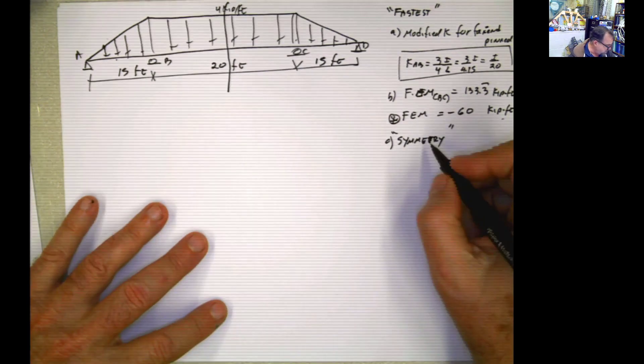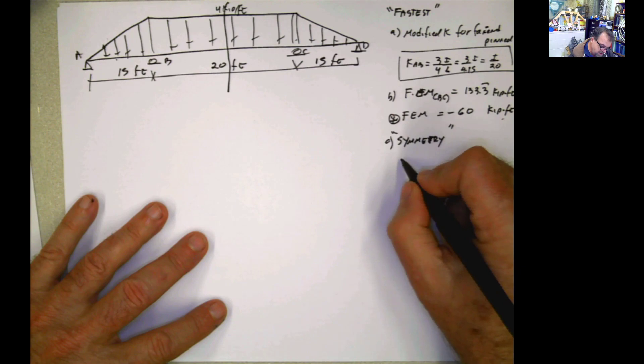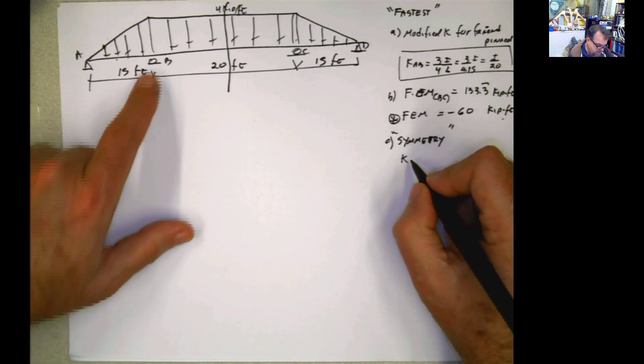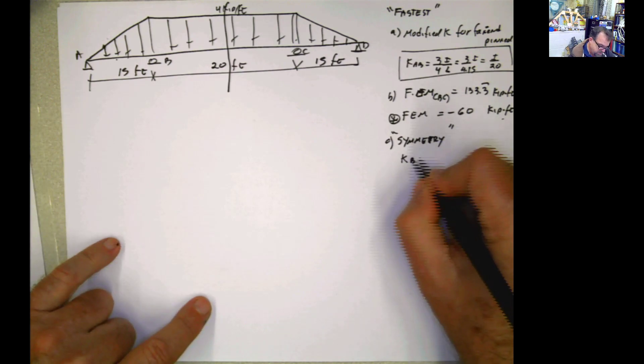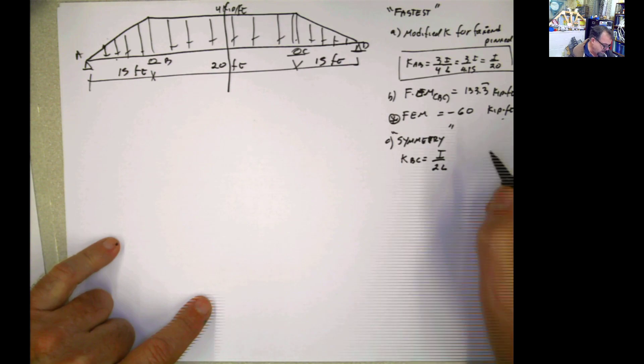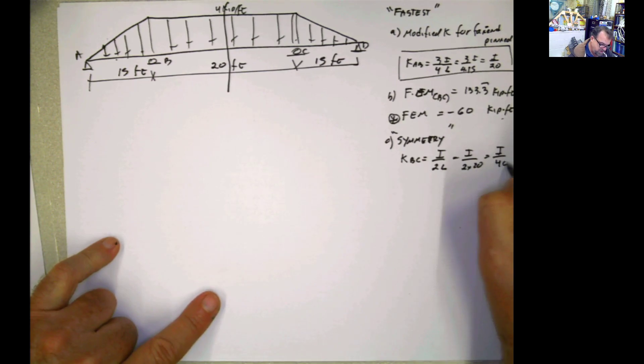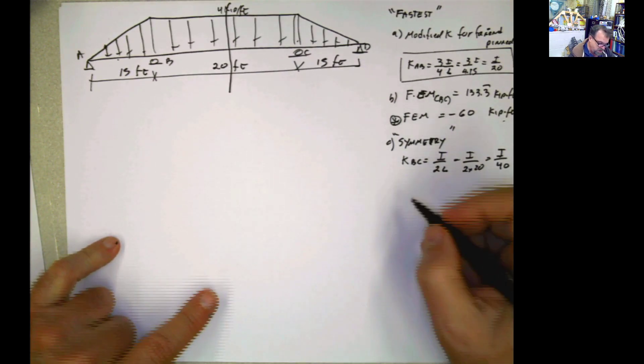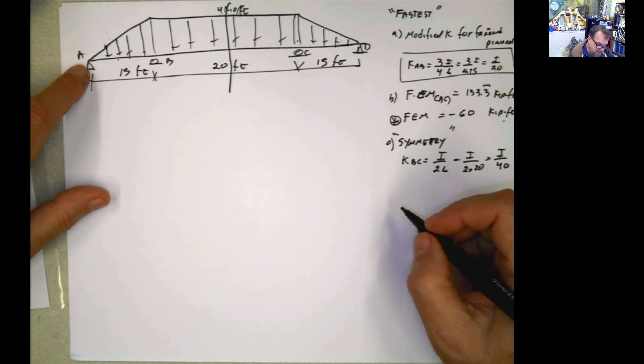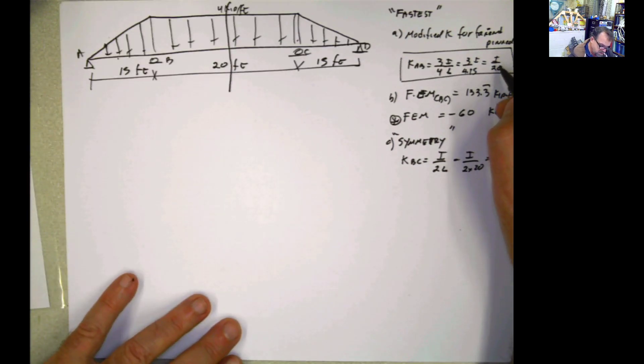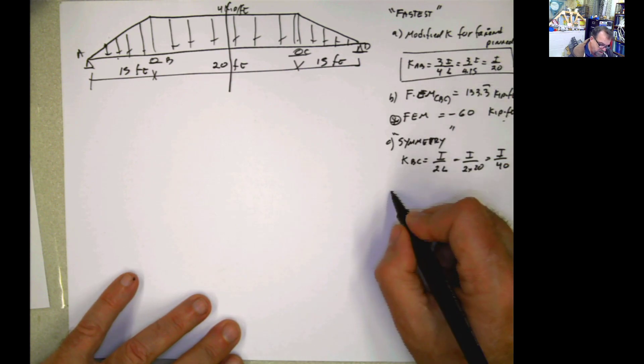So for symmetry, because of symmetry, the K of this span, BC, is going to be I divided by 2L, by L being 20 feet. So it's going to be I divided by 2 times 20. It's going to be I divided by 40. By using the far end hinge here, we already reduced that to that. Now, if we calculate the distribution factors...